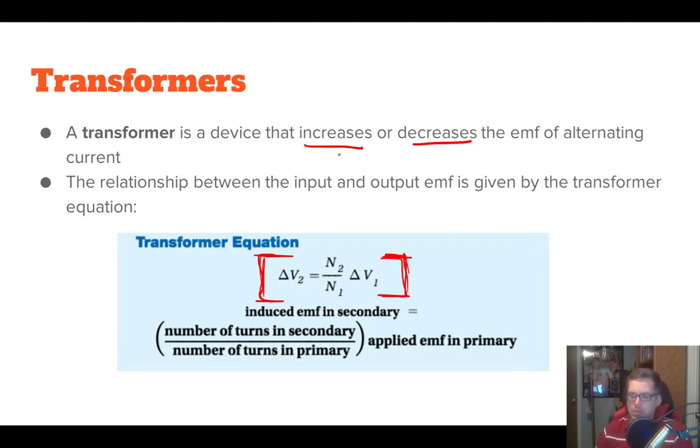All right. And so we've got some EMF coming in our primary. That's our delta V1, our potential difference in the primary. And then from there, we're going to convert, from there, we're going to multiply it by the ratio of the turns in the secondary versus the primary. And that's going to give us the EMF in the secondary. So here's our transformers here.